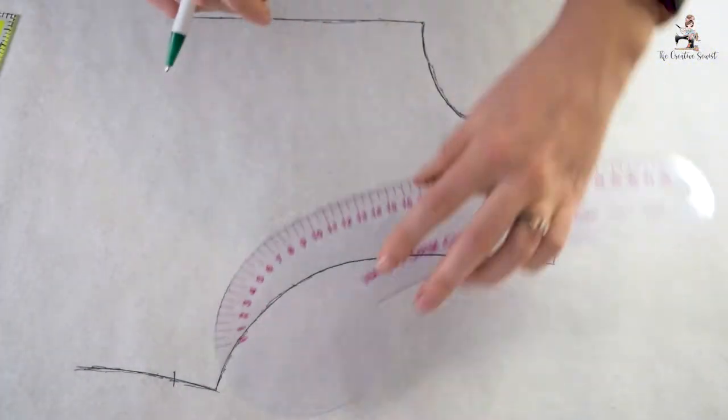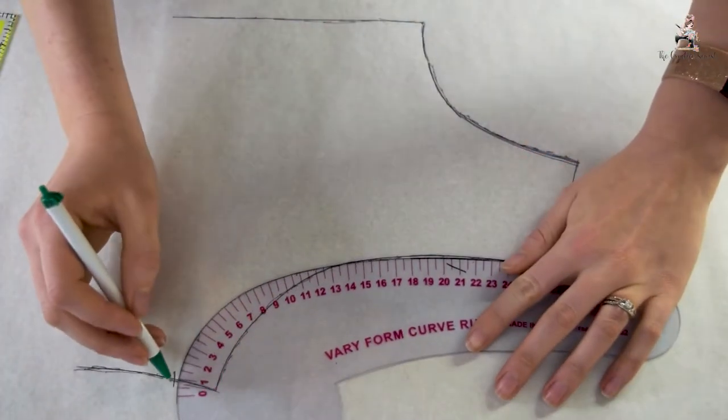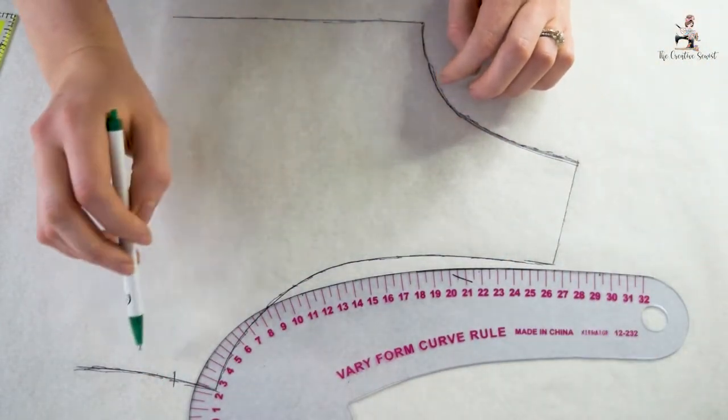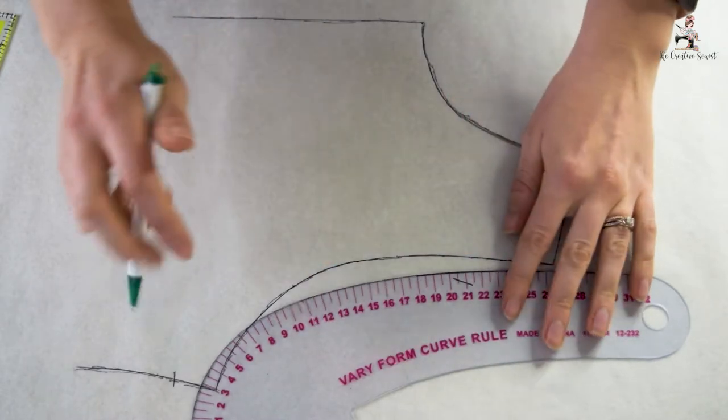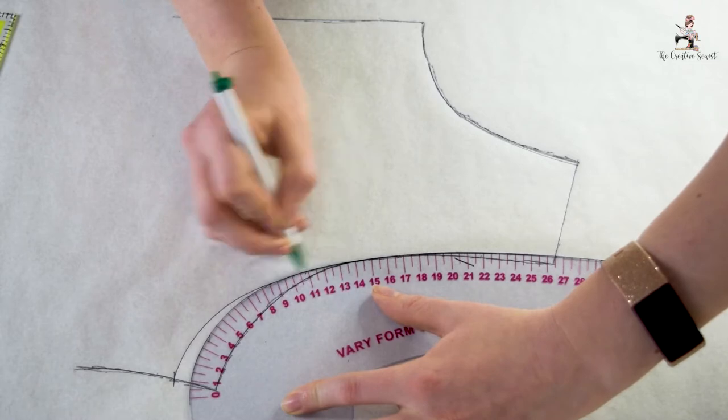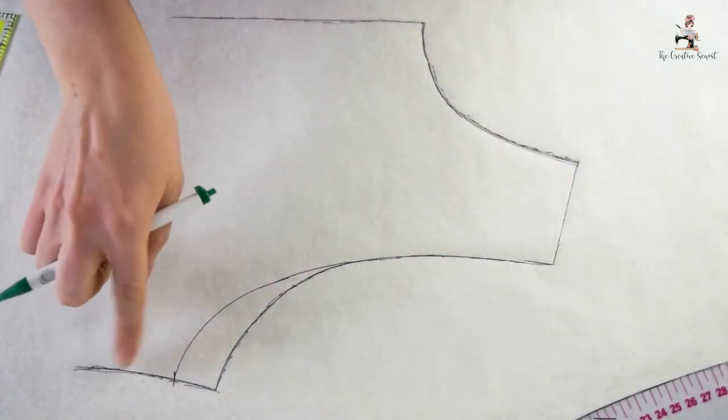Then simply go in with my French Curve Ruler and I'm just going to draw in a nice line that blends into my original curve. The French Curve Ruler helps me to get that nice even curve. So there would be my new armhole if I wanted to lower my armhole by an inch.